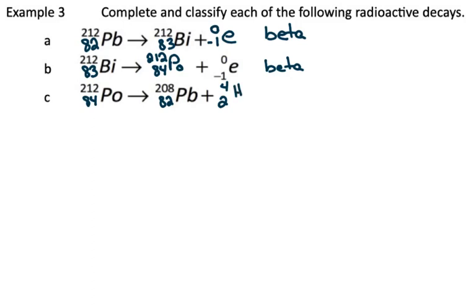Atomic number of 2 is helium. And because we have a helium atom ejected, this is alpha decay.